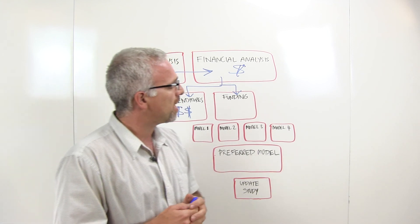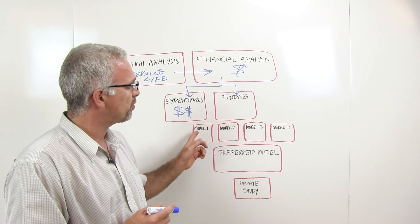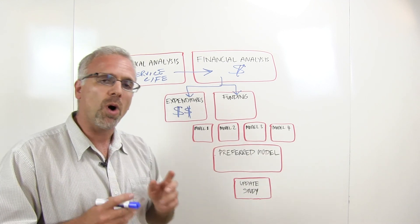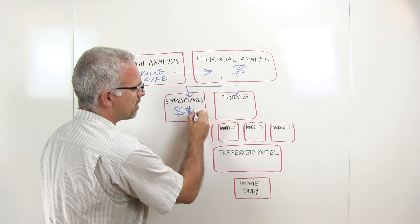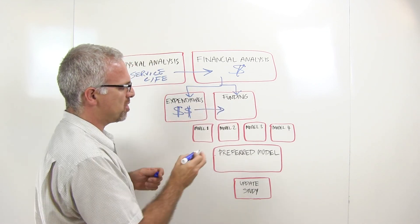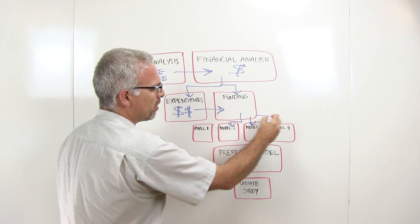The beauty of the regulations in British Columbia is that we are required to provide at least four alternative what-if funding models. In other words, different paths to get from where we are to where we need to be. The regulations require at least four funding models, what-ifs.